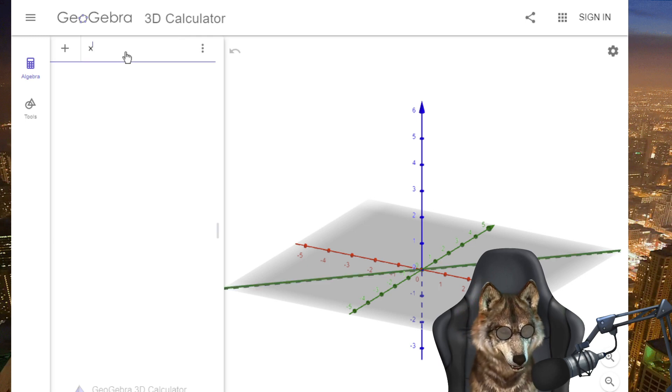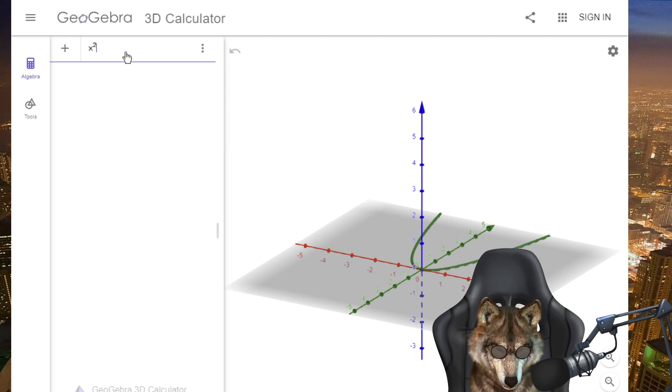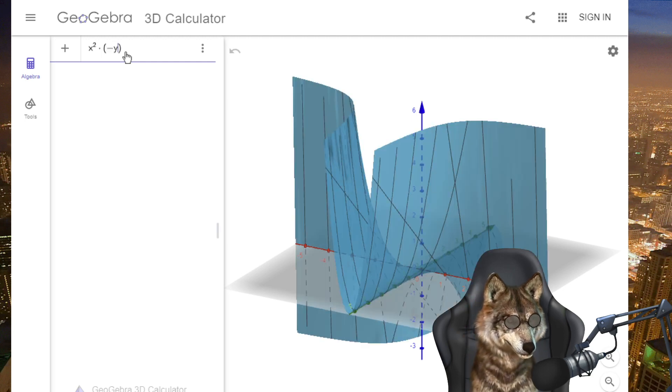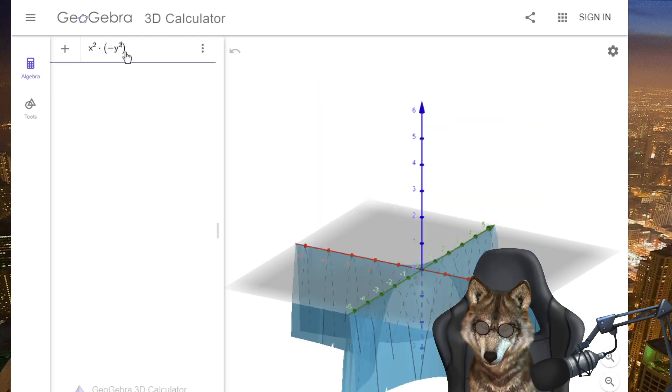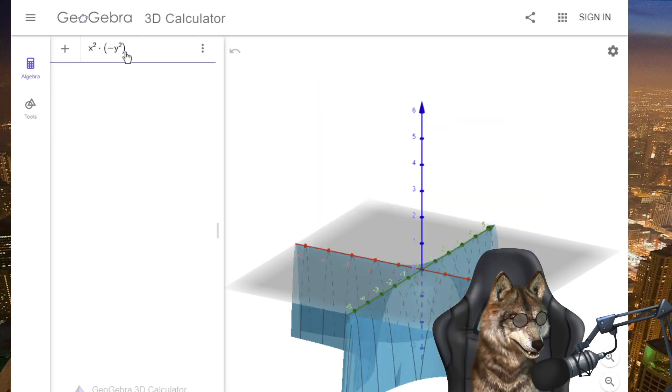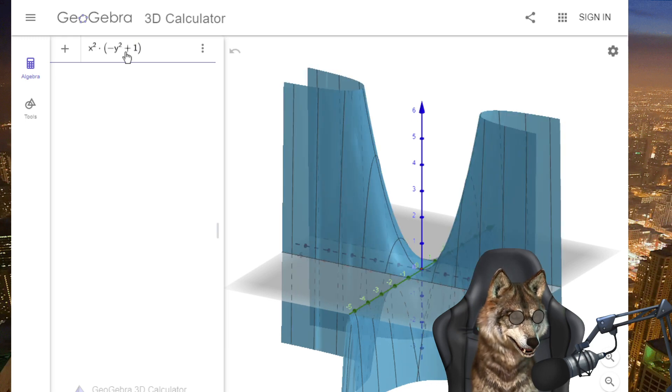This is where the 3D calculator comes in handy. So you can say all right well I want to take my speed function, x squared, and I want to multiply that by my steering reward function which was negative y squared plus one.